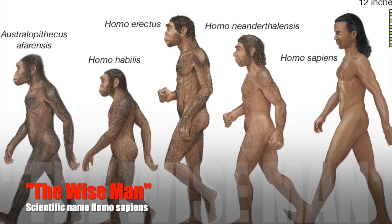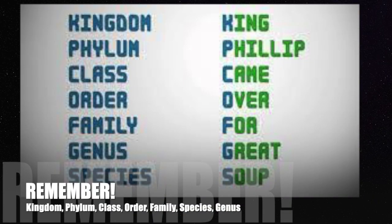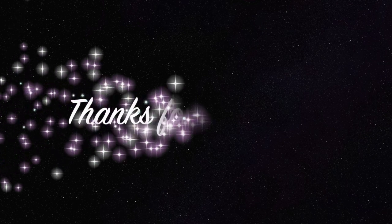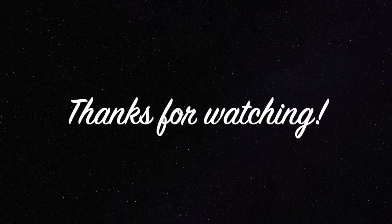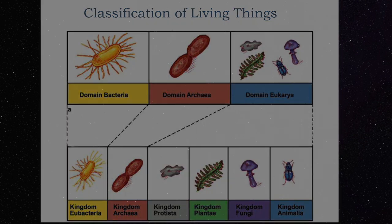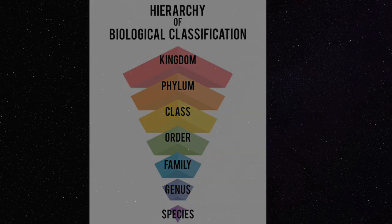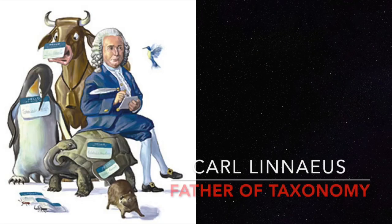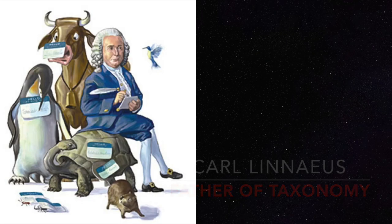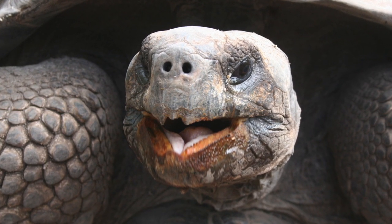A way to remember these seven levels is the mnemonic: King Philip came over for good soup. I hope this video helps you understand the three domains of life, the six kingdoms of life, and the seven levels of the classification hierarchy by Carl Linnaeus, the father of taxonomy. Thanks for watching, and I'll be back with another video next time.